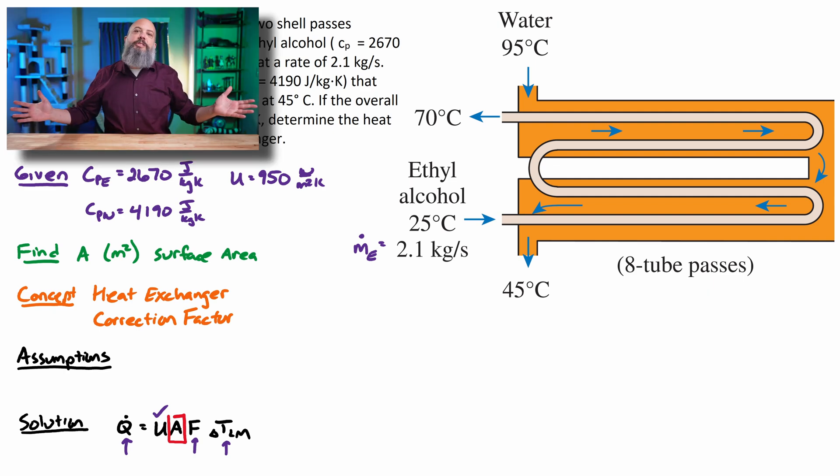So for every heat exchanger problem, you're probably going to use m dot C_P delta T to find Q, the rate of heat transfer. And when using m dot C_P delta T, this only applies to a single flow of water.